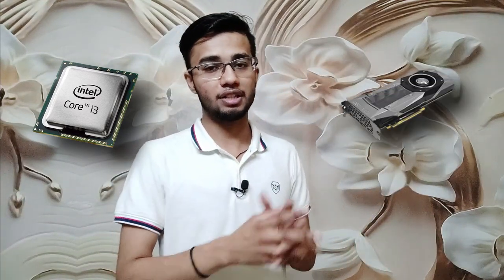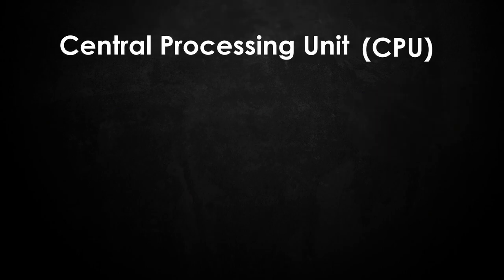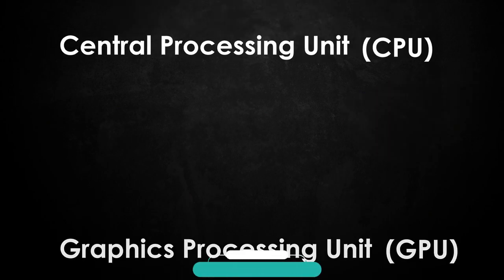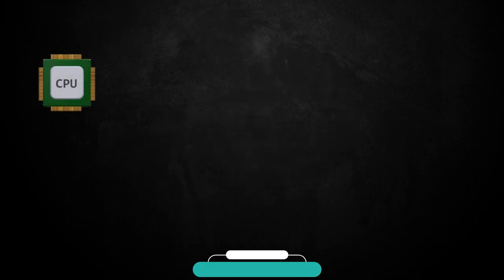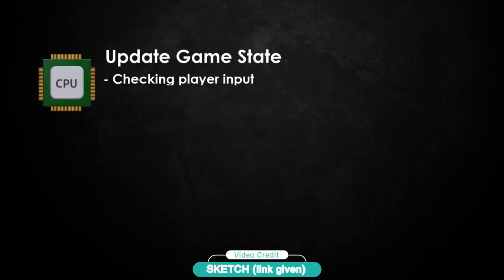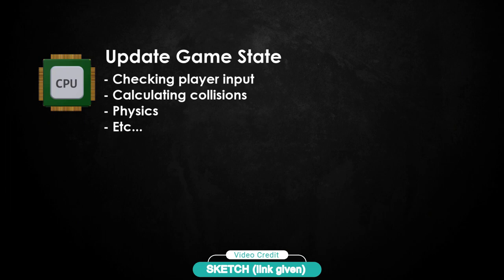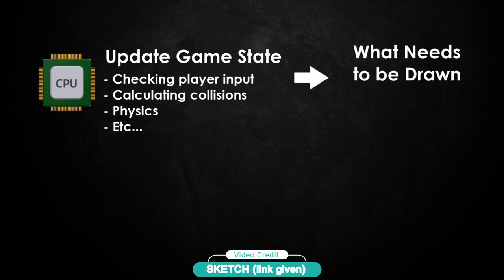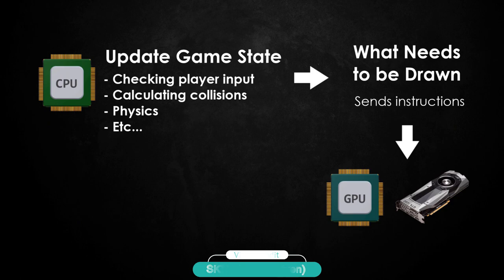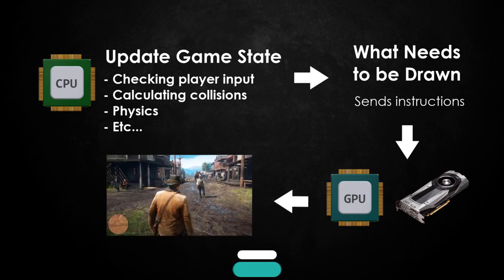First we need to understand how the computer draws the frame. The CPU and GPU work together to essentially make the game run. The CPU generally has high-speed cores, so its major task is to do the calculation part — like checking player input, calculating collisions and physics, etc. With the output of these calculations as instructions, the GPU draws the frames.